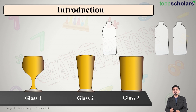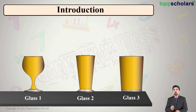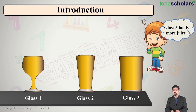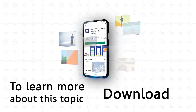What do we understand from this? Glass three requires three bottles to fill it completely, which means glass three holds more quantity of juice. Glass one holds just one bottle, glass two can hold two bottles, but glass three holds three bottles of juice — meaning it holds the most. To learn more about this topic, download the Top Scholars app.